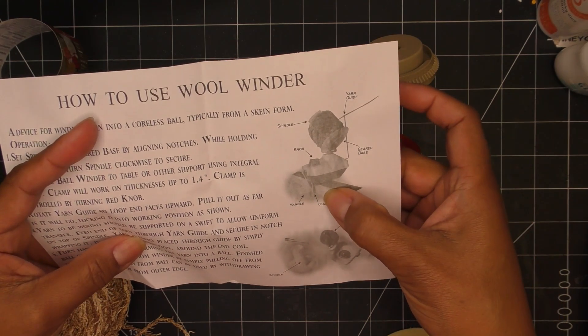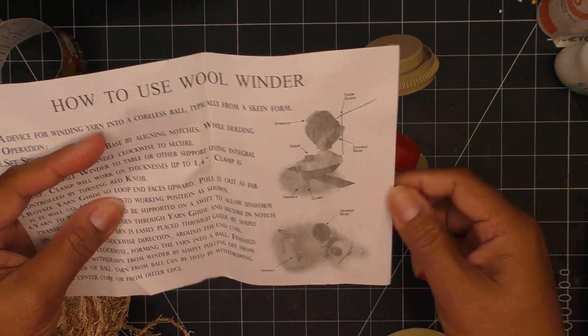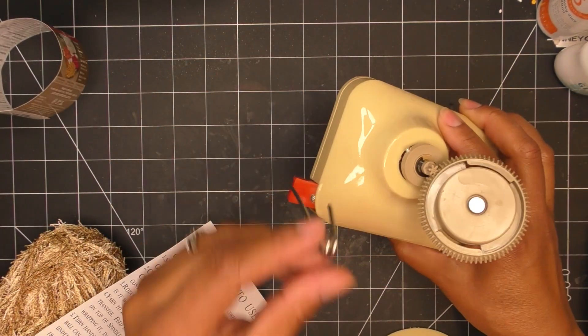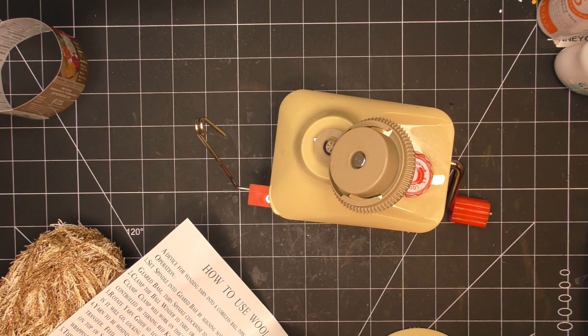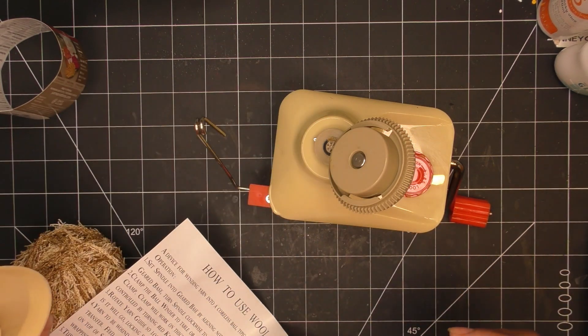You have the knob of course for the clamp, because obviously you want to clamp it to something so you can just turn. Usually at a yarn shop you'll just see that they have this at the end of their table somewhere, and sometimes you can just use the one they have there if you don't want to purchase it.